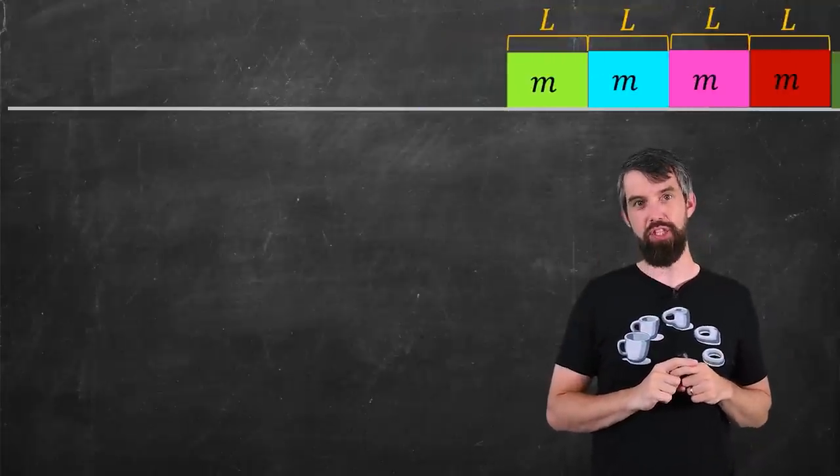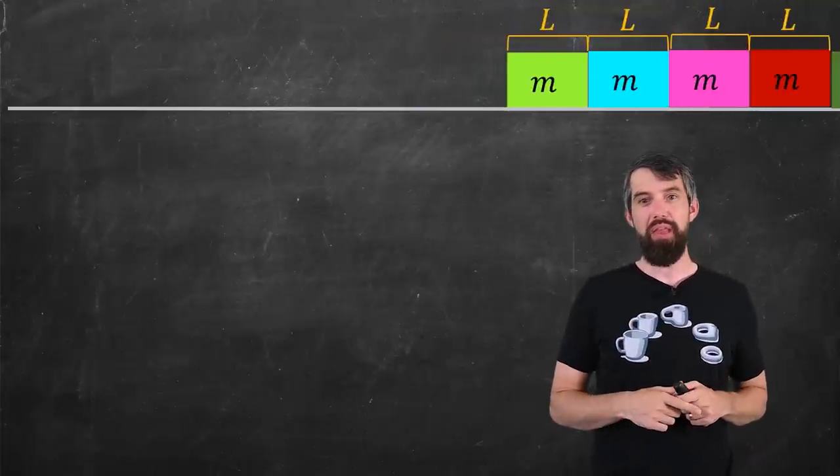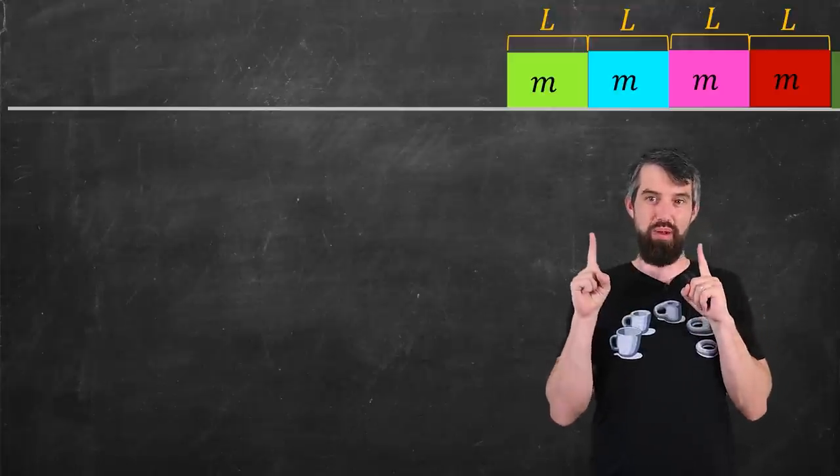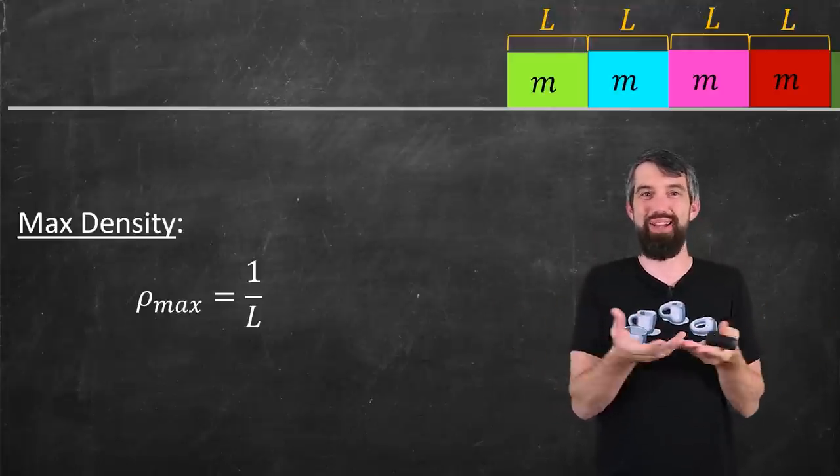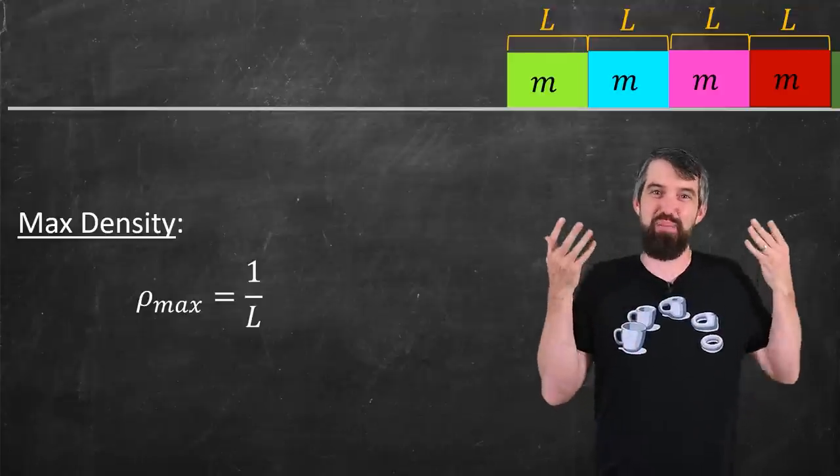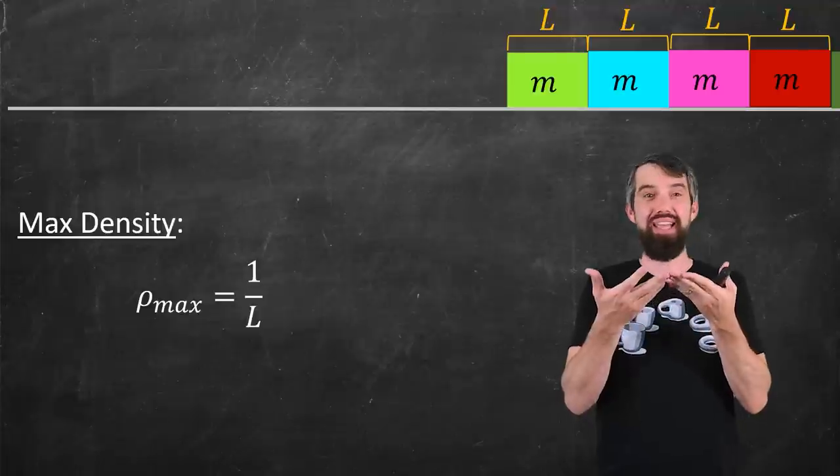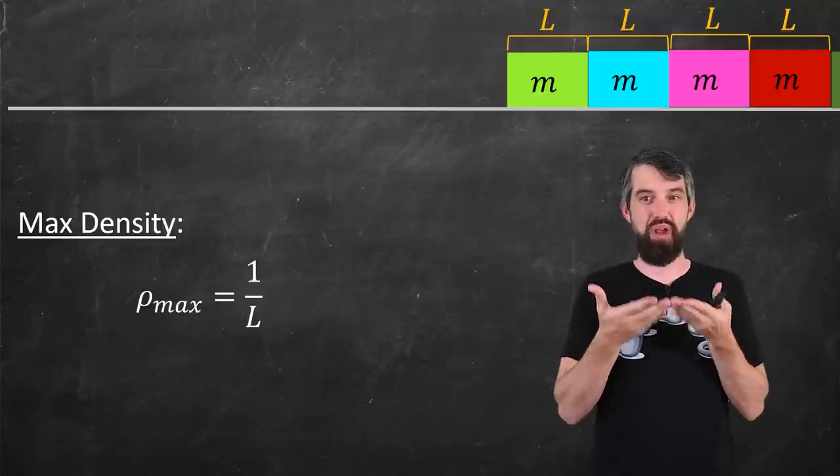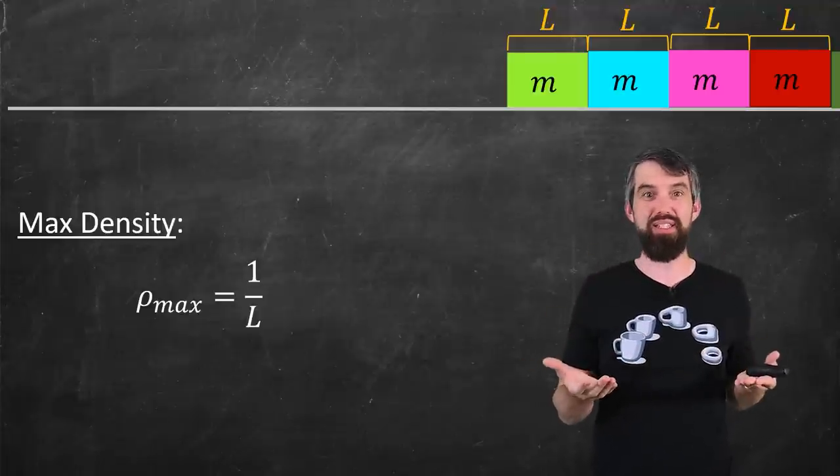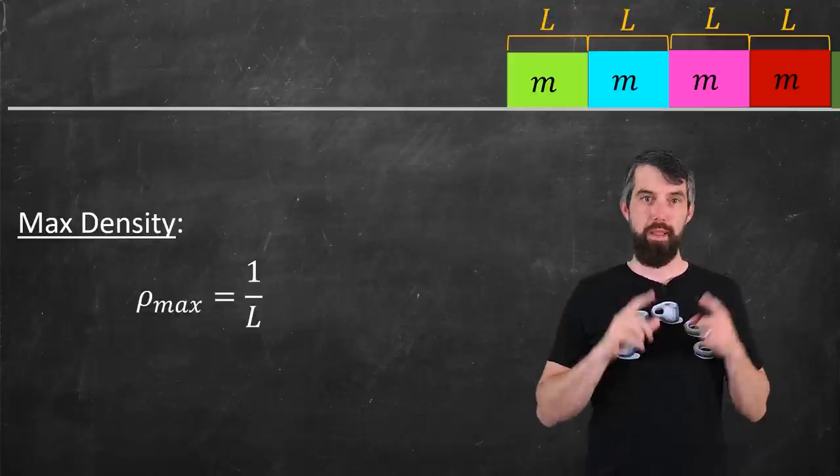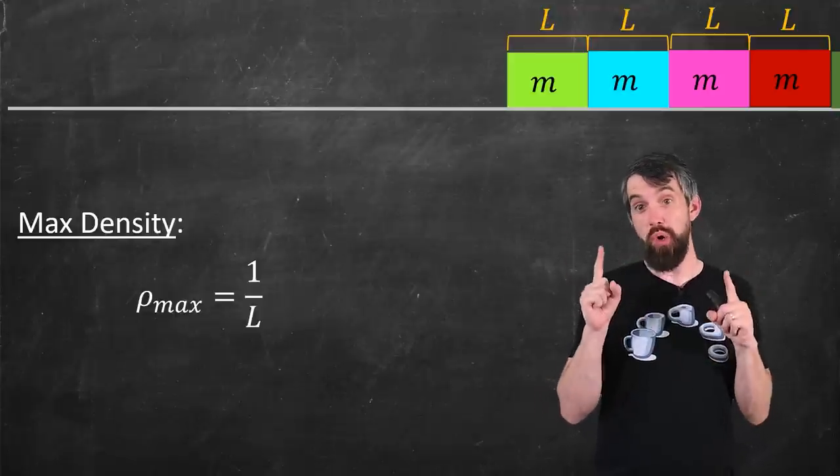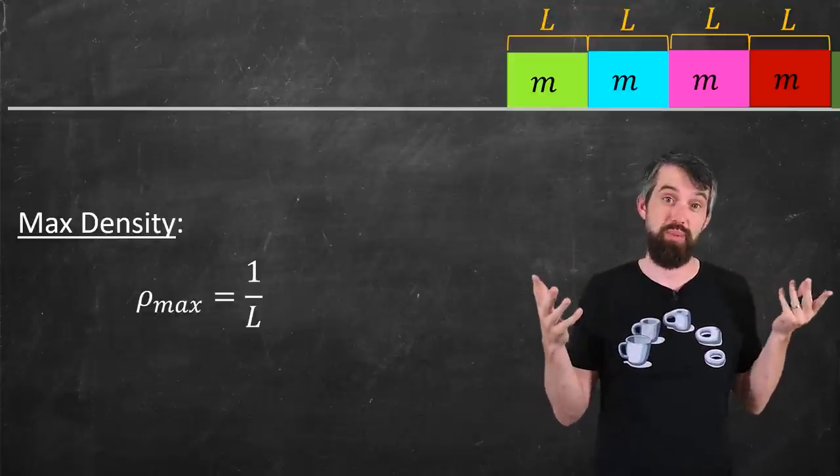If I send all the cars together like this, so the d goes to zero, then I get a maximum density. This density would be the place where there's no ability to drive, your velocity's going to be right down to zero, because there's not even a centimeter of gap between the cars. But nevertheless, the density would just be four cars over four l in distance, so one divided by l. My notation for this is ρ_max for the maximum density.